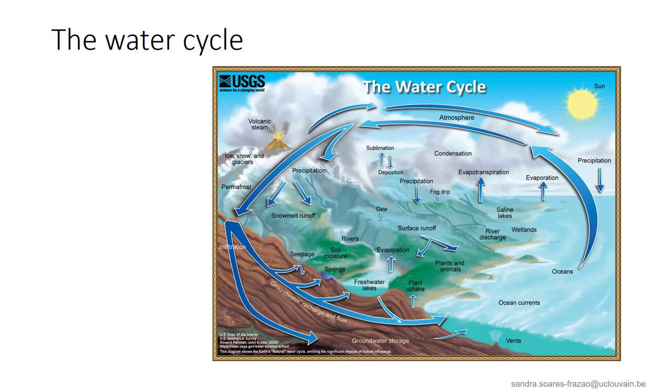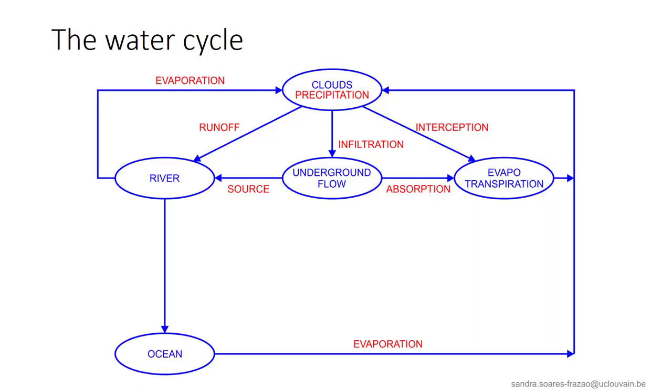If we are interested mostly in quantifying the water fluxes, this cycle can be represented as follows, where the blue arrows represent the natural fluxes. Precipitations induce runoff, and this water finally arrives in rivers and then in oceans.